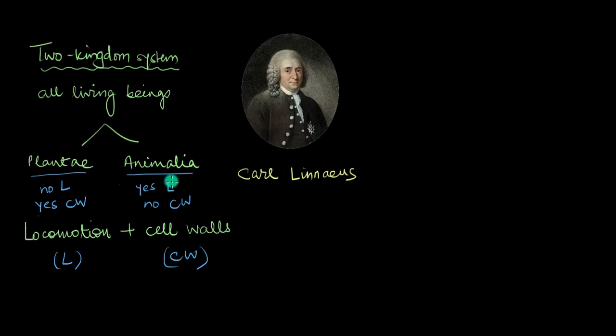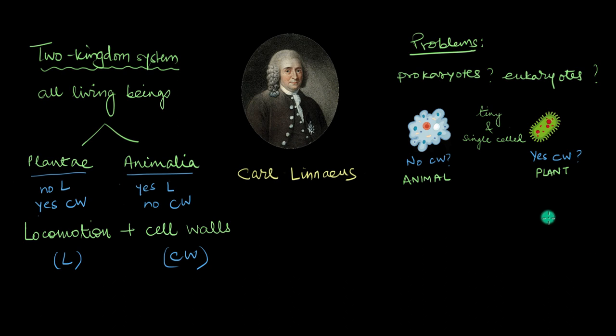However, things weren't exactly right with this classification system. For one, there's no way anyone could tell which one of these organisms were prokaryotes and which one of them were eukaryotes. Not only that, a bunch of these organisms were tiny and single-celled like the amoebas and the bacteria, and they were placed with large and multi-celled animals and plants.